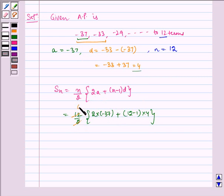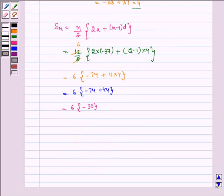Now this gets cancelled by 6, so 6 multiplied by minus 74 plus 11 into 4, which equals 6 multiplied by minus 34 plus 44, which equals 6 multiplied by minus 30, which equals minus 180. So Sn equals minus 180. Therefore, the required sum is minus 180.